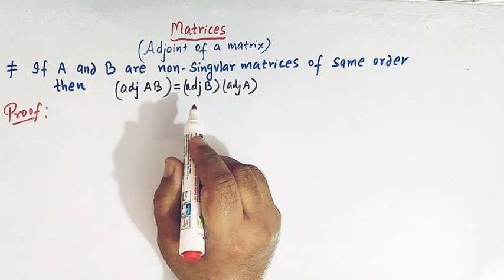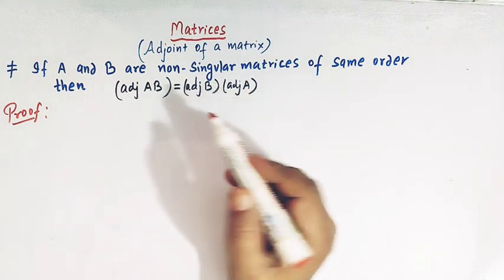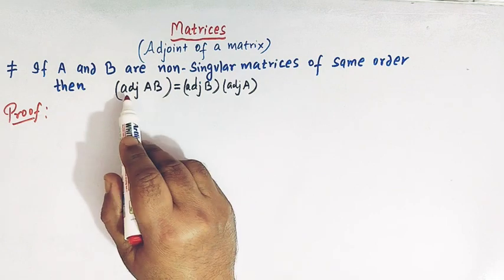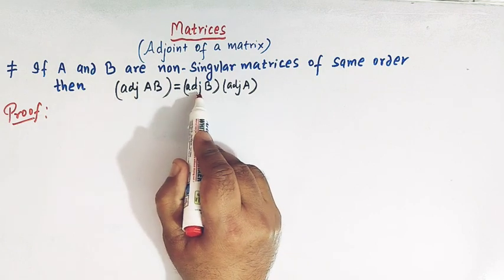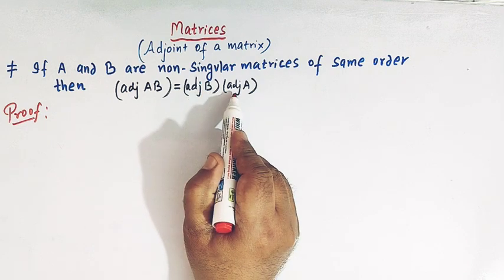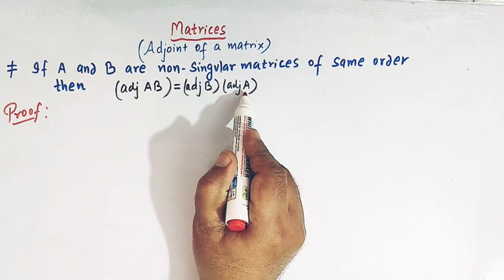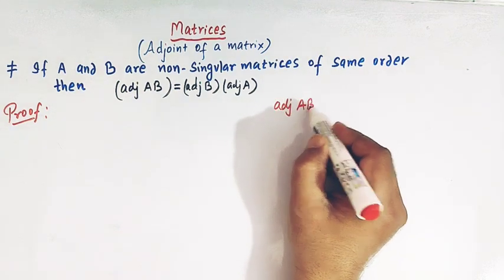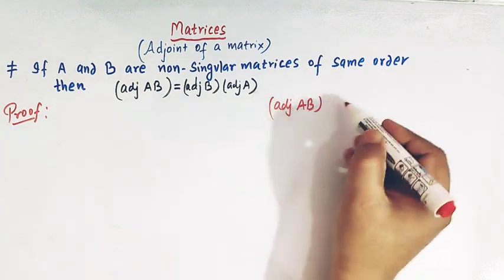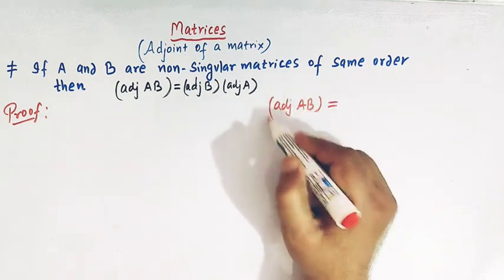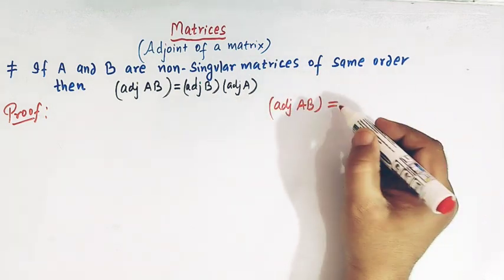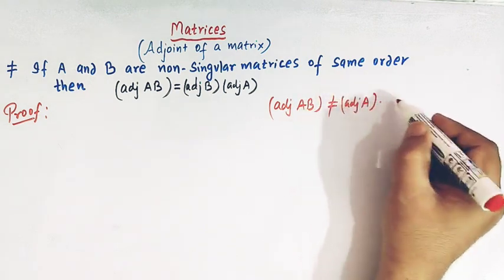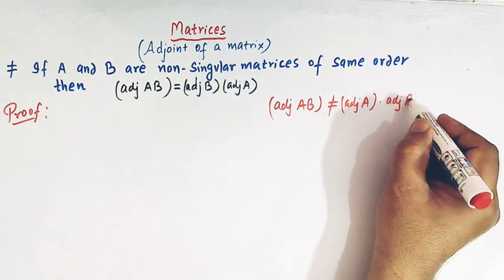Now, we know that if A is a matrix, then its adjoint is also a matrix. Here we have the adjoint of the product of A and B, and this matrix is not equal to adjoint of A times adjoint of B.